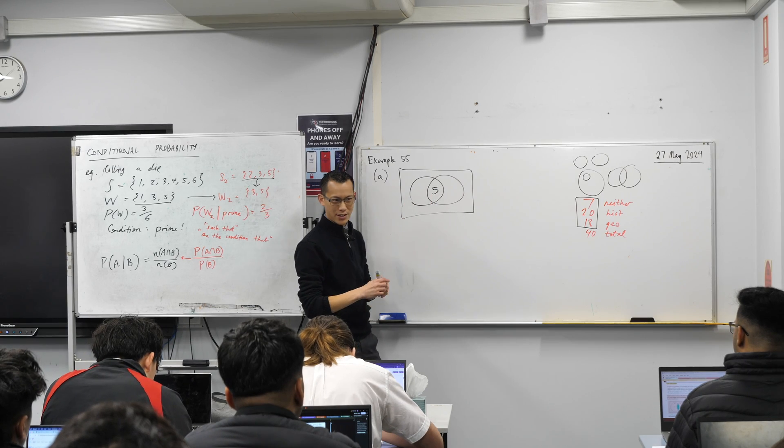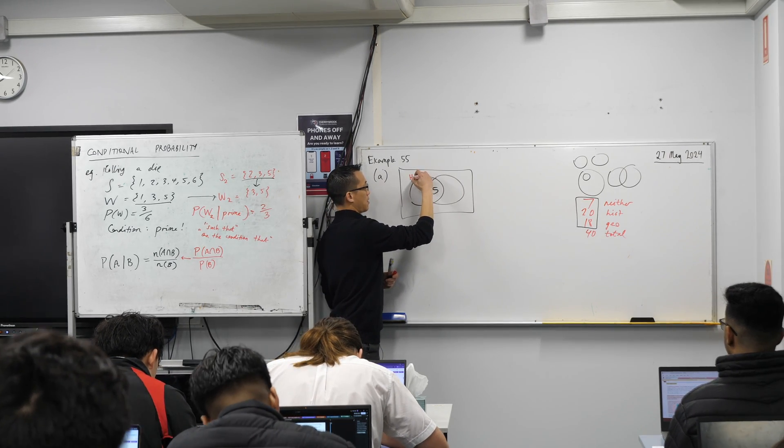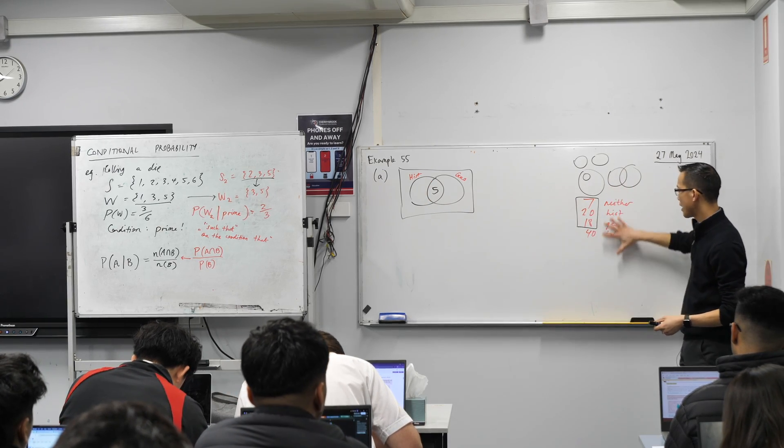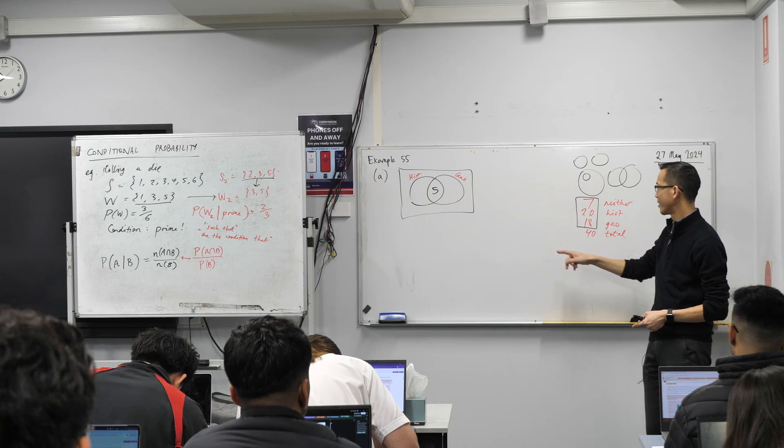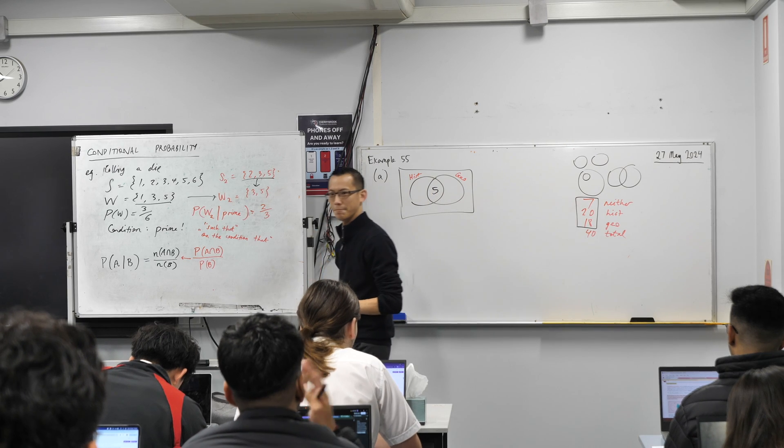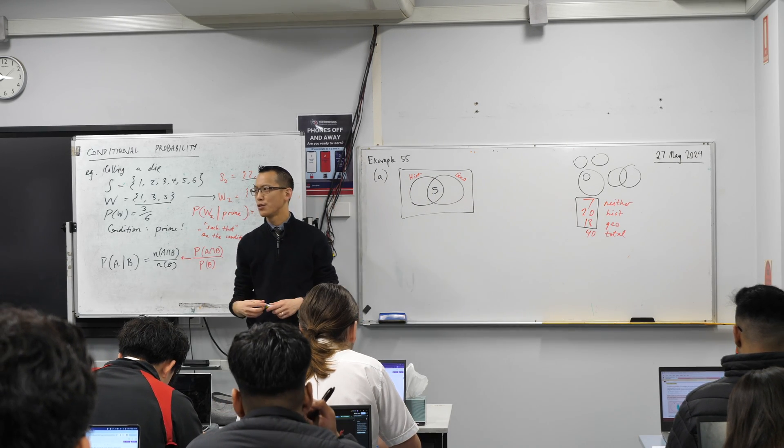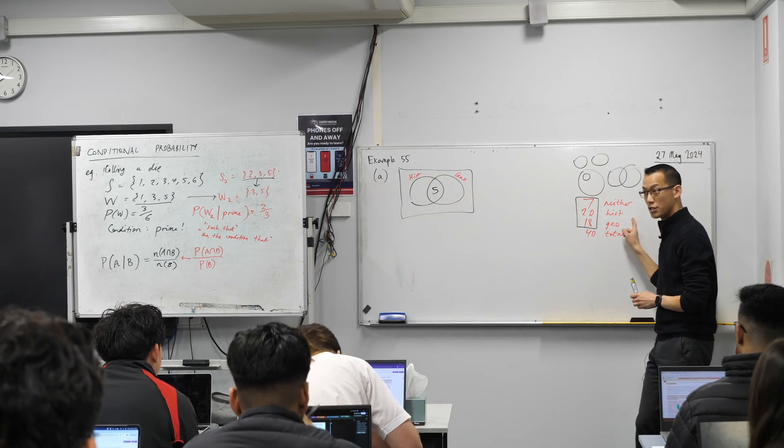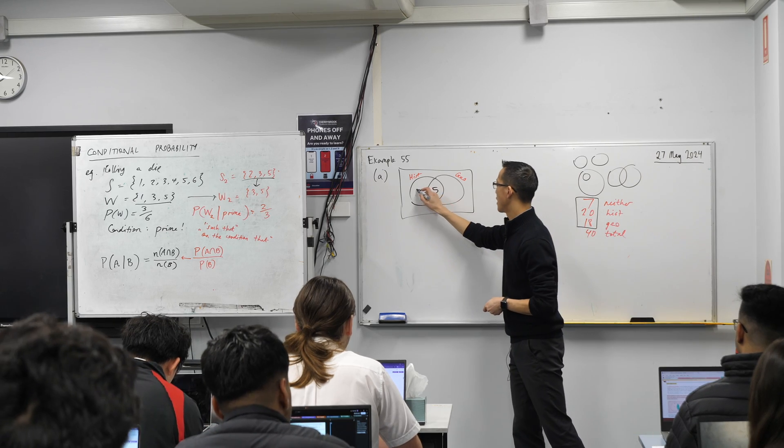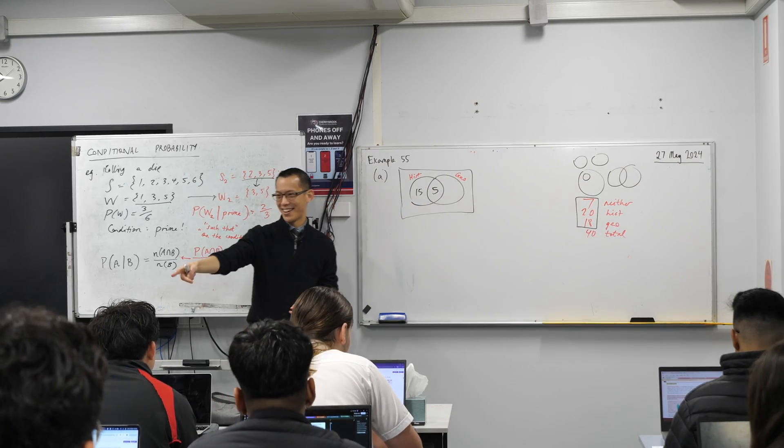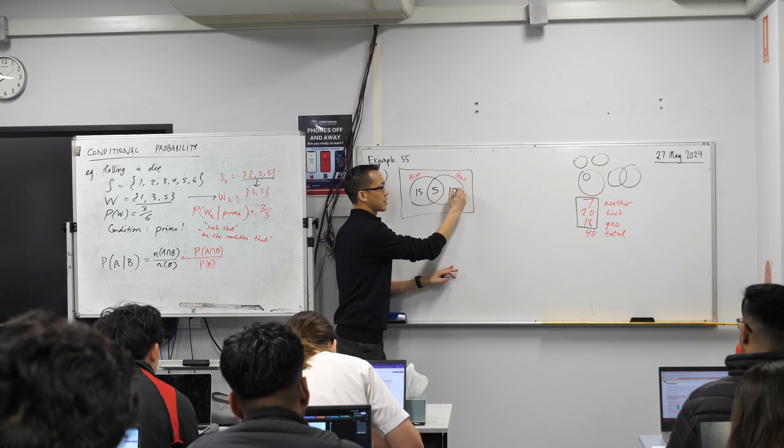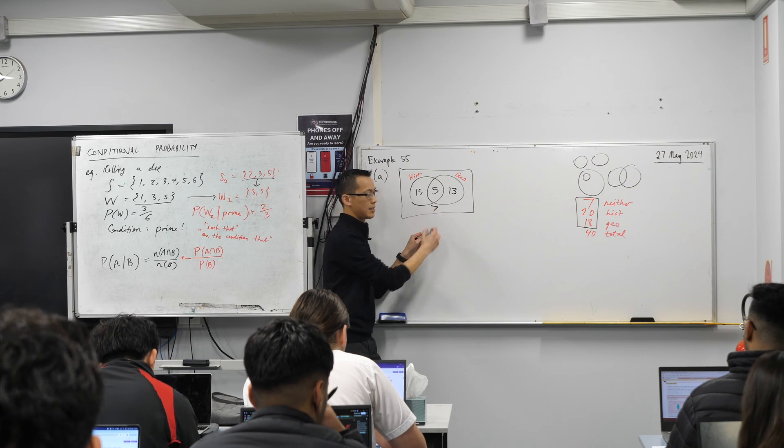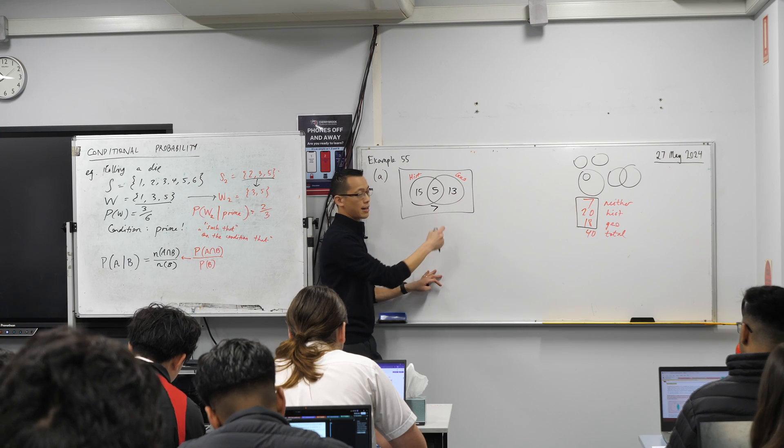A student is chosen at random, find the probability that a student studies both. This is the key to answering this question. Before we do that, I've started doing this Venn diagram. Why don't we actually finish it? We'll put history over here and geography over here. Always label your Venn diagram so you know what it's talking about. Can we fill in the rest of the numbers? I'm going to look to three of you to give me three pieces of information. History is 15. There are 20 in total in history, I've already counted five of them, so there's 15. Geography is 13. Same logic. These are the ones who haven't yet been double counted. And the last one is the easiest of all. How many out here? Seven. These are the ones who study neither. And you can cross-check - all of these things add up to 40.